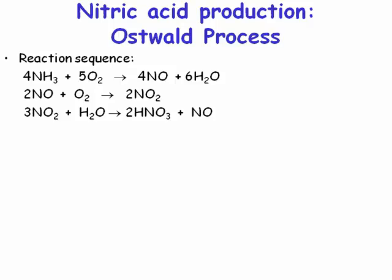How do we make nitric acid? Nitric acid is made by first making nitric oxide, which is nitrogen in oxidation state +2. We then need to oxidize our nitric oxide to give us nitrogen dioxide, which has nitrogen in oxidation state +4.